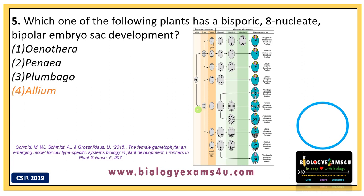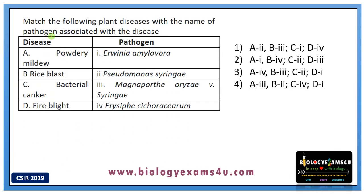Next question: Match the following plant diseases with the name of the associated pathogen. Options are: A, powdery mildew; B, Erwinia amylovora; C, rice blast; D, Pseudomonas syringae; E, bacterial canker; F, Magnaporthe oryzae; and G, fire blight — Erysiphe cichoracearum.